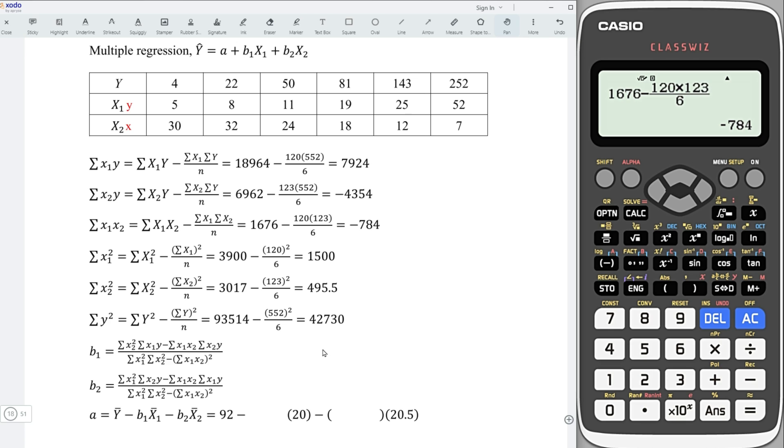Let's copy the value according to the formula. For sum of squares for the variable x1 and y, we should put it here. x2y, put it here. x1x2, x1 square, and x2 square. By using calculator, we should be able to obtain the value.